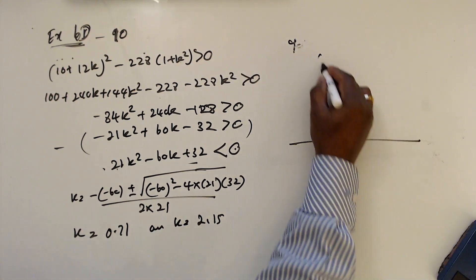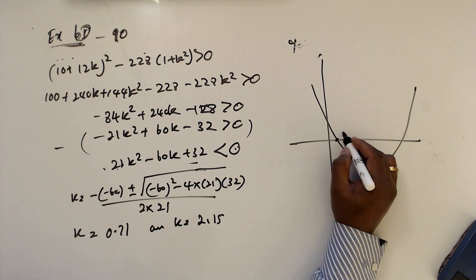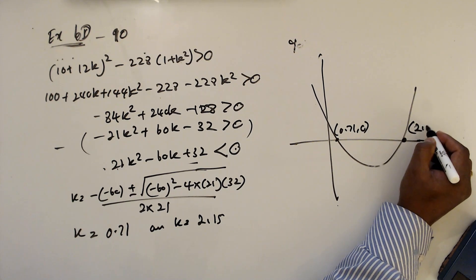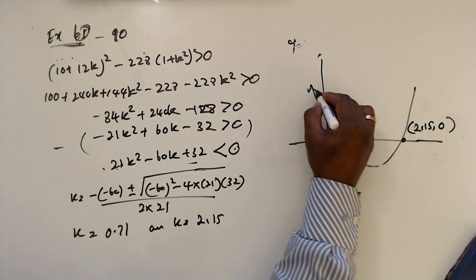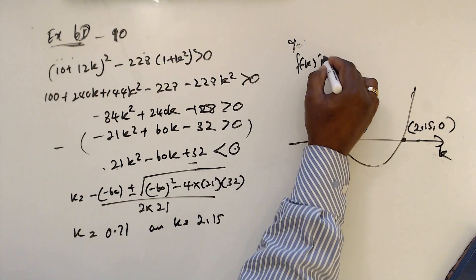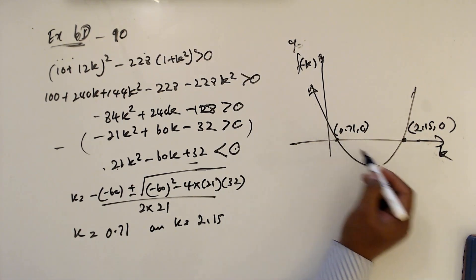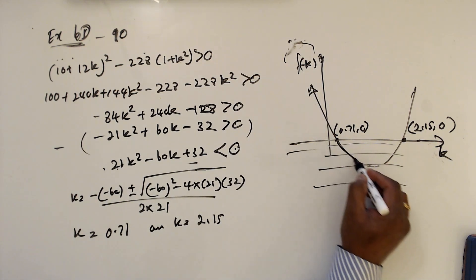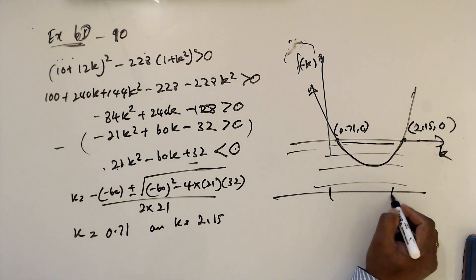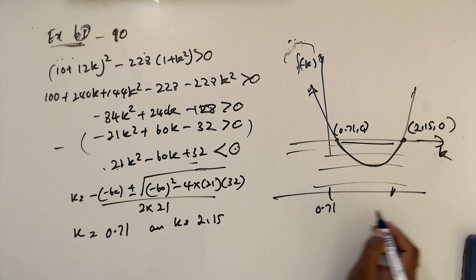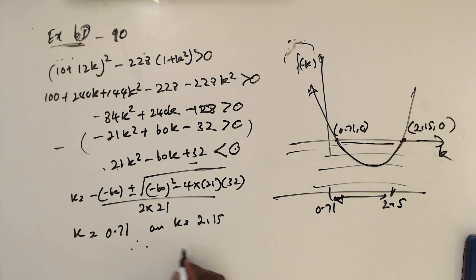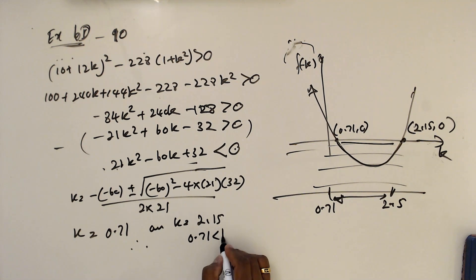The curve goes like this, with roots at 0.71 and 2.15 on the k-axis. The f(k) values are negative in between those two roots. So the range is 0.71 < k < 2.15.